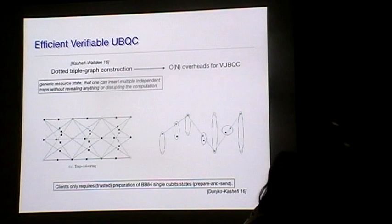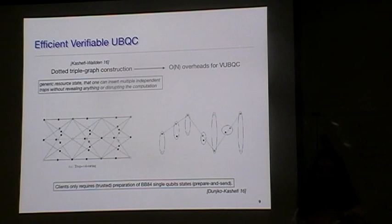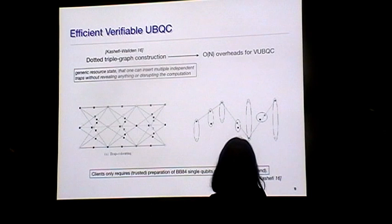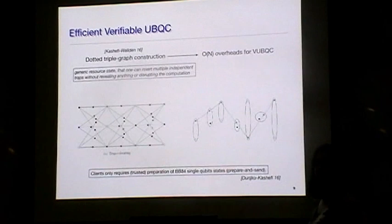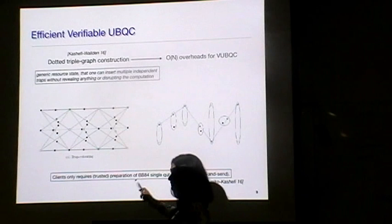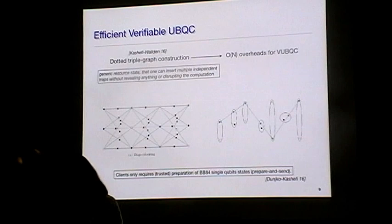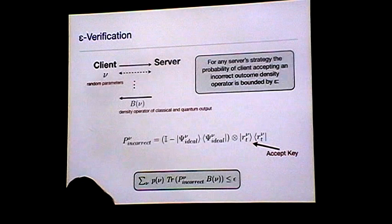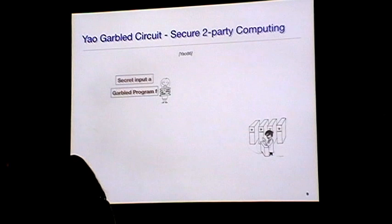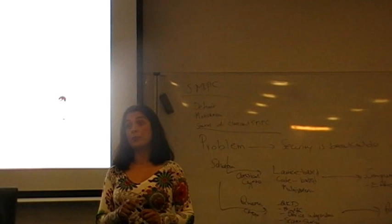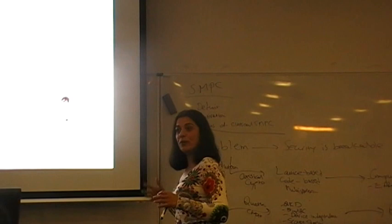Another nice development in recent work with Leandro is that before, these protocols required a variety of states — zero, one, or plus-theta from a discrete set. But if you really want to push toward actual quantum technology, you want to minimize this. We now know that for these protocols, the state that the client, verifier, or any party needs to prepare is basically BB84 states: plus, minus, plus-i, and minus-i. These protocols give us the minimal state required from the client's or verifier's perspective.